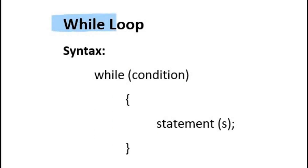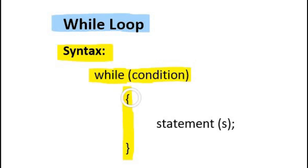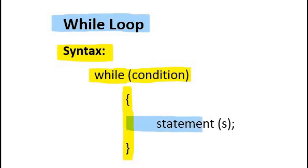The while loop is the simplest loop available in C language. Let's see the syntax for writing while loop. We start with writing the keyword while, then the condition being tested is written inside parenthesis, and then comes the body of loop. The body starts and ends with curly braces. Inside the body of loop, we can write a single statement or multiple statements.